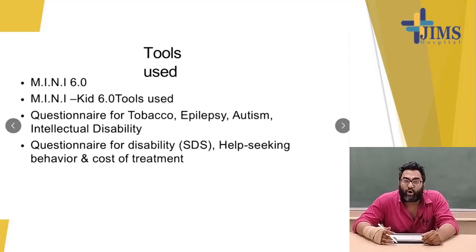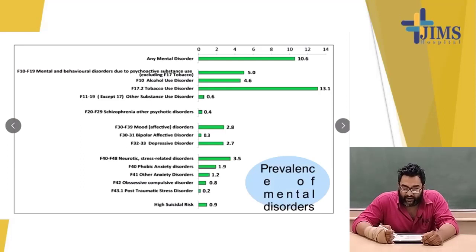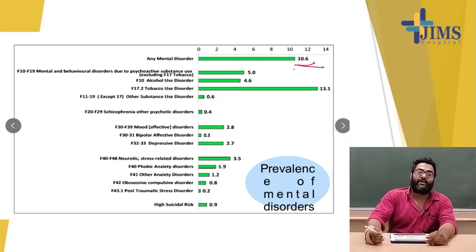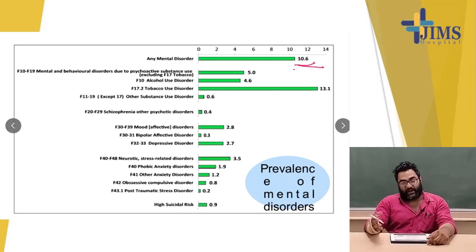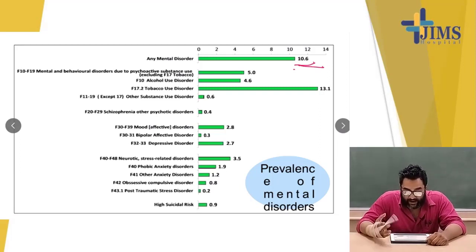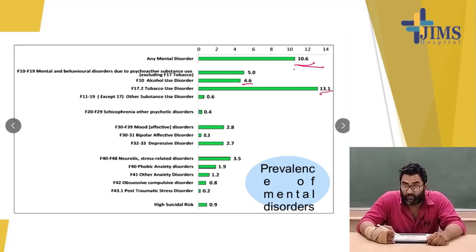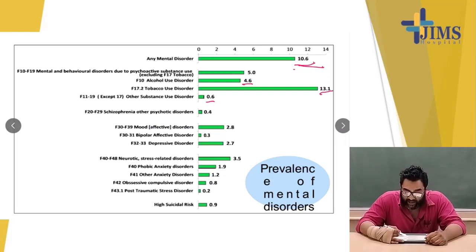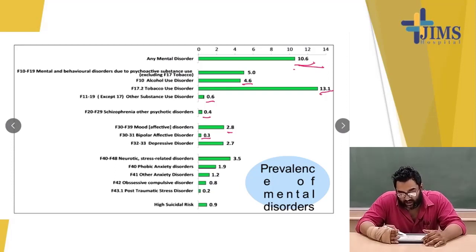Questions about disability, health-seeking behavior, and cost of treatment were also considered. Any mental disorder in India was found at 10.6%. Mental and behavioral disorders due to psychoactive substance use were 5%, with alcohol disorder at 4.6%, tobacco use disorder at 13.1% — more than double the total psychoactive substance use disorders. Other substance use disorder was 0.6%, schizophrenia and other psychotic disorders were 0.4%, mood/affective disorders were 2.5%, and bipolar affective disorder was 0.3%.